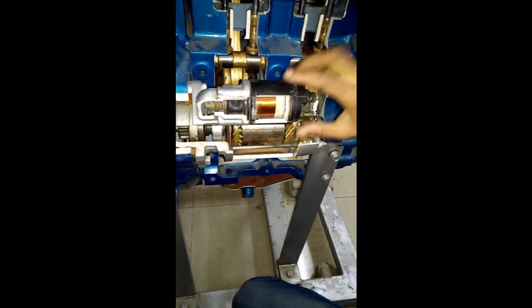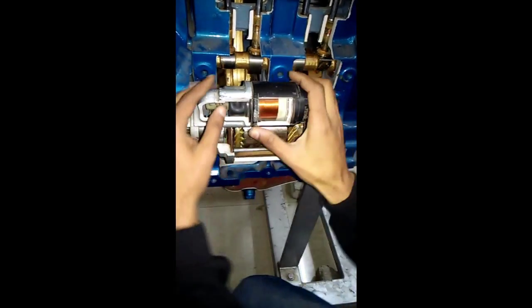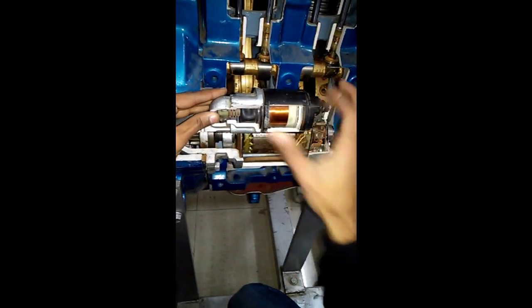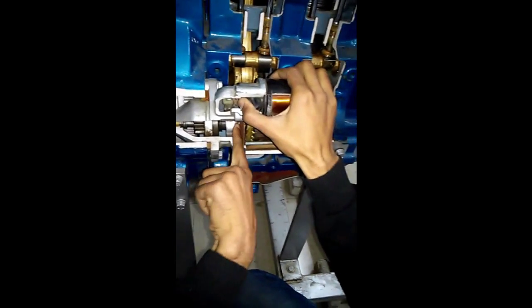When current is generated into this coil, this solenoidal shaft moves backward. As you can see, when the coil has current, it will move backward. When this moves backward, this will move upward.